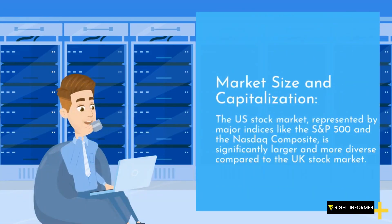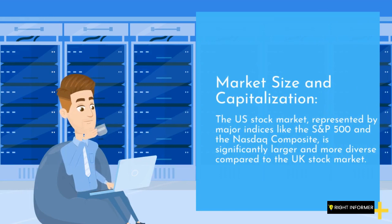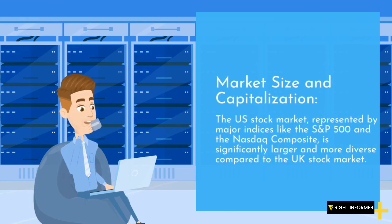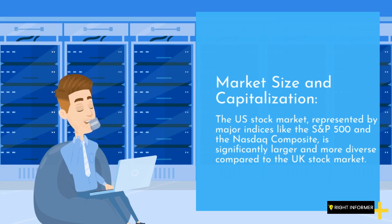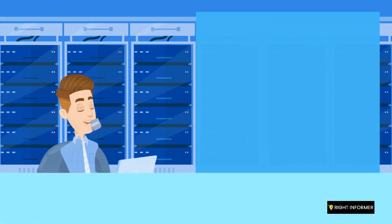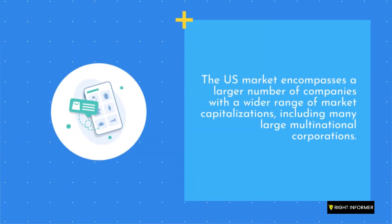Market Size and Capitalization: The US stock market, represented by major indices like the S&P 500 and the NASDAQ Composite, is significantly larger and more diverse compared to the UK stock market. The US market encompasses a larger number of companies with a wider range of market capitalizations, including many large multinational corporations.